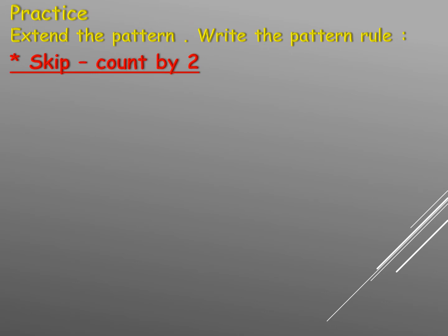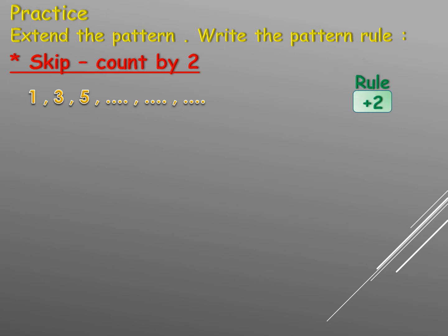Practice: extend the pattern and write the pattern rule. Skip counting by two: one, three, five. What is this — plus or minus? Ascending, that means plus. The difference between one and three: three minus one equals two. So our rule is plus two. One, three, five — the next will be seven, then seven plus two equals nine, nine plus two equals eleven.